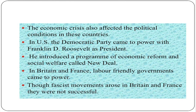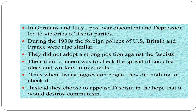The economic crisis also affected the political conditions in these countries. In the United States, the Democratic Party came to power with Franklin Roosevelt as president, who introduced a program of economic reforms and social welfare called the New Deal. In Britain and France, labor-friendly governments came to power. Though fascist movements arose in Britain and France, they were not successful. In Germany and Italy, post-war discontent and depression led to victories of fascist parties. During the 1930s, the foreign policies of the United States, Britain and France were also similar — they did not adopt a strong position against the fascists. Their main concern was to check the spread of socialist ideas and workers' movements. Thus, when fascist aggression began, they did nothing to check it; instead, they chose to appease fascism in the hope that it would destroy communism.